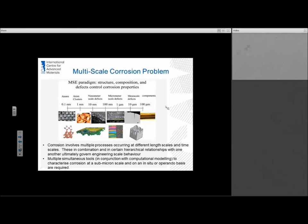There is a multi-scale association with corrosion. Corrosion involves multiple processes occurring at different length scales and time scales, usually in combination, but with certain hierarchical relationships ultimately governing the engineering scale behavior. Most cases we will need multiple simultaneous tools in conjunction with computational modeling to characterize corrosion at a submicron level, or indeed new techniques in which we can perform in-situ or in operando basis when required.